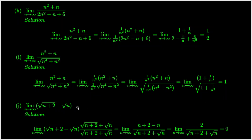We now work on question 5j. We have seen the technique when we evaluate the limit of a function at infinity. Multiply the numerator and the denominator by the conjugate of the square root expression. We can see the answer.